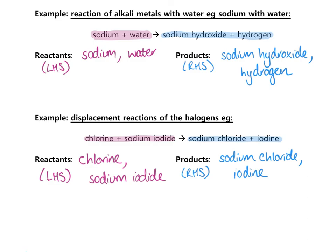You'll soon be able to write word equations for all the reactions studied in this module and in Form 5. From word equations we want to convert to balanced symbol equations. In our next lesson we'll learn how to balance an equation and then put it all together to write a balanced symbol equation.